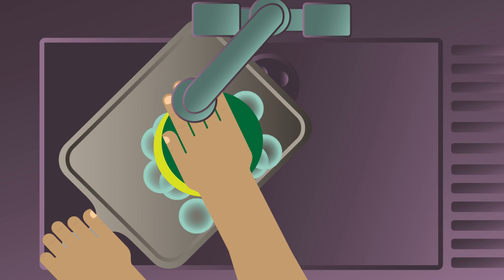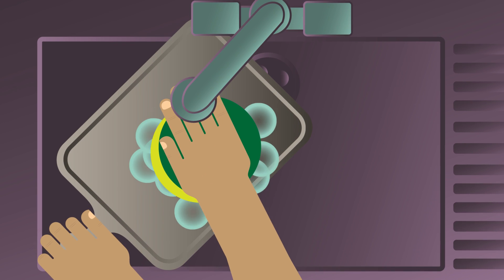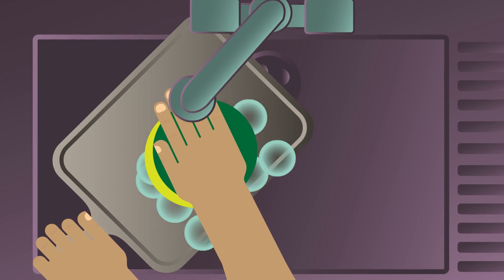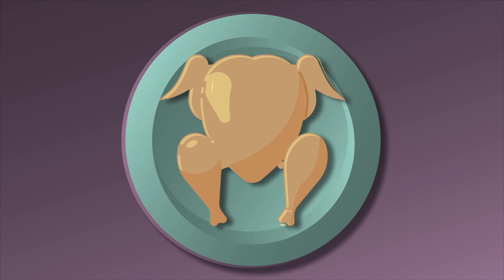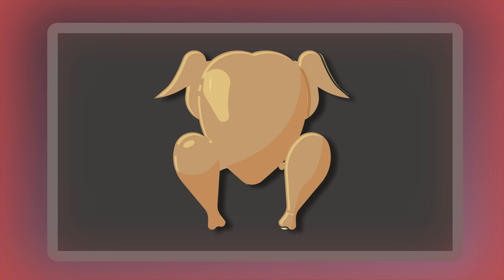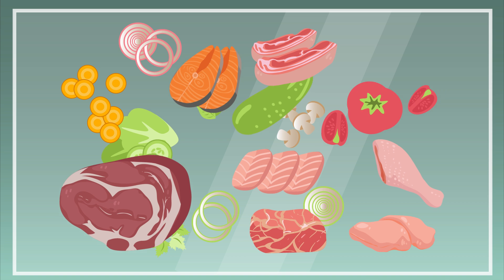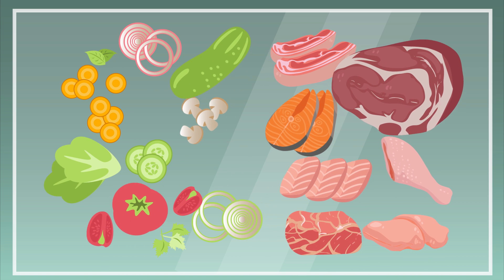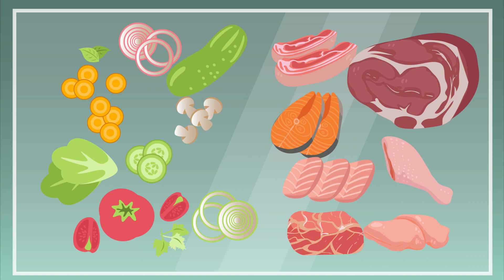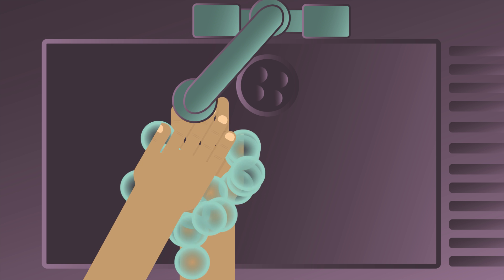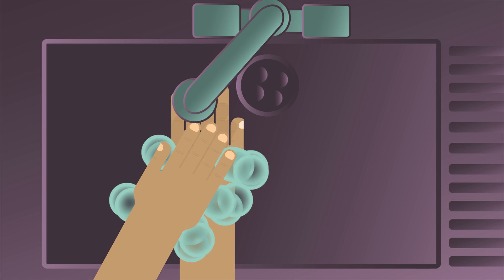Catching salmonella can be avoided by practising good kitchen hygiene. Chicken should always be cooked all the way through to kill any salmonella bacteria that are lurking in the meat. Also, it is important to keep raw meat and foods that are to be eaten raw, like salads, separate and to wash your hands after handling raw meat.